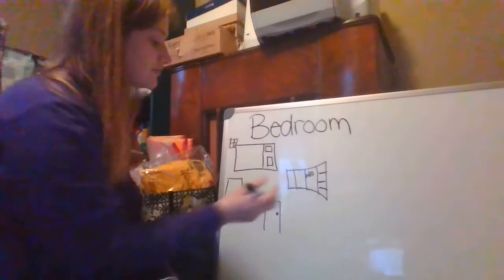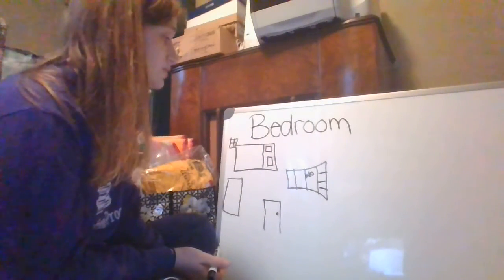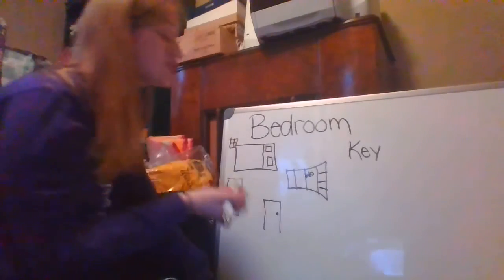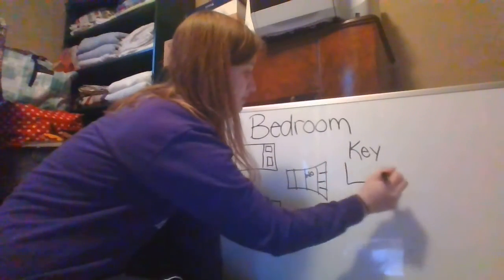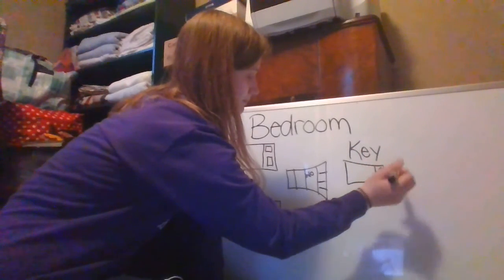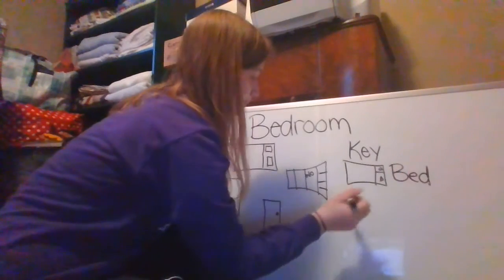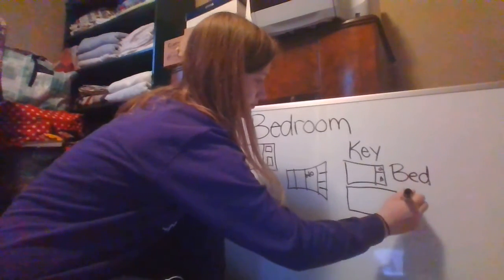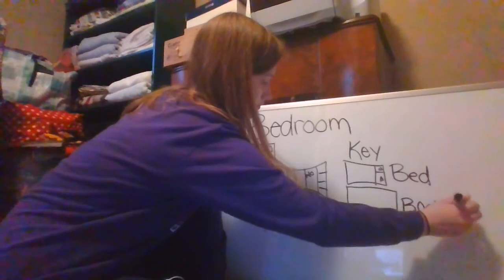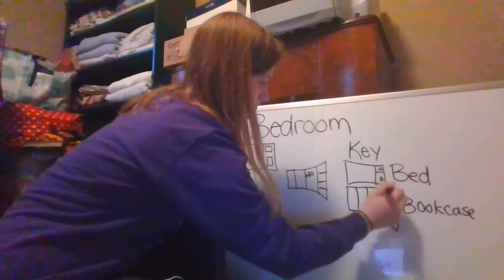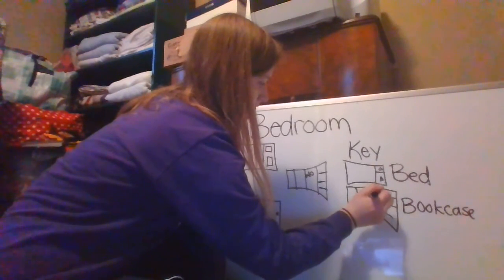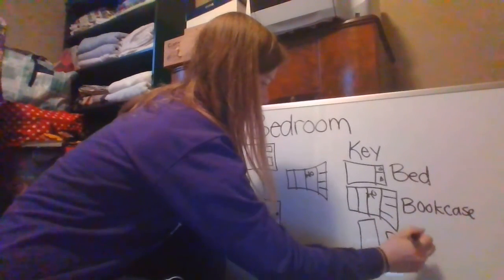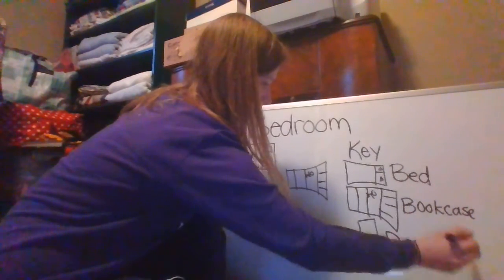So then you're going to go over here and just let me know what things are. So when you write the word key, I just want to know what the basic things are. So I want to know that this is your bed, this is your bookcase, and this is your dresser — if you have one.